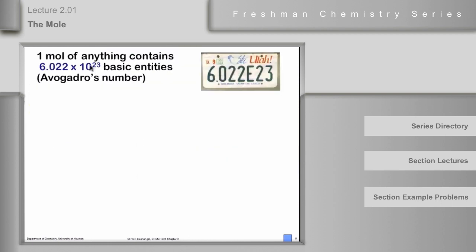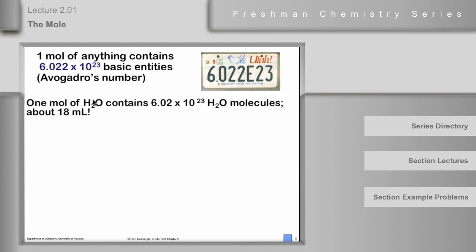One mole of anything contains 6.022 × 10²³ — if you want four significant figures — basic entities: atoms, molecules, ions. I saw this license plate, I think it might have been in Utah: 6.022e to the 23rd — Avogadro's number. So if you see a license plate like that, you'll know what it means.